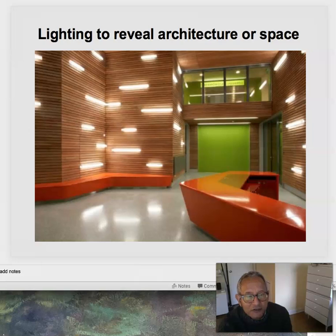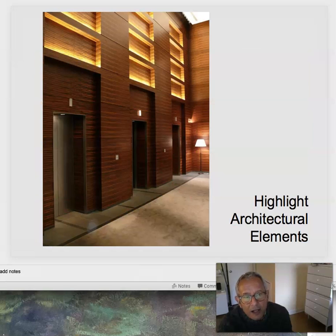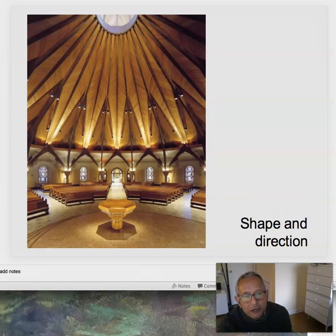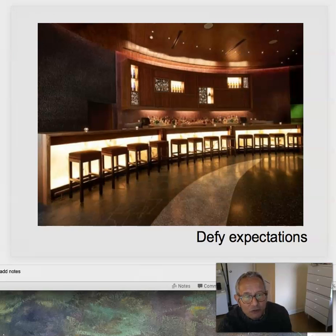Lighting to reveal architecture — this is big for me as an architect who does lighting design. Here we have horizontal strip lights — probably fluorescents, they could be LEDs — emphasizing the horizontality of slots in the wood wall. Or here, highlighting the recesses above the elevators in this elevator lobby. Or here, really emphasizing the roof and the altar in this sacred space. And here, emphasizing the shape and giving direction, lighting the vault and directing us outwards. Sometimes we light to attract people to a bar and defy expectations with a glowing front.